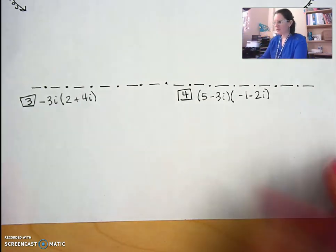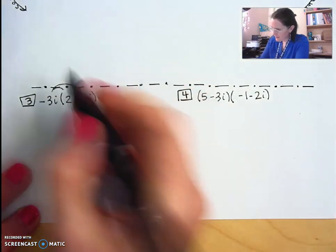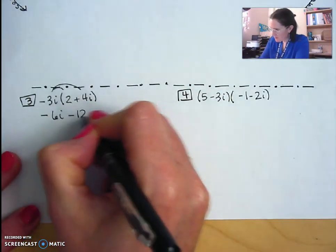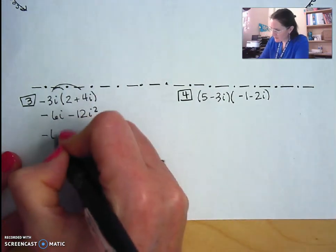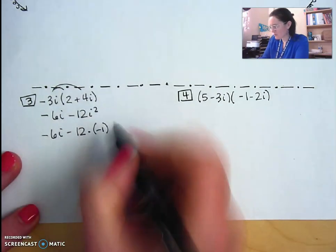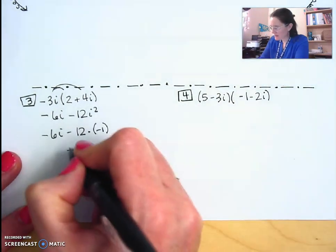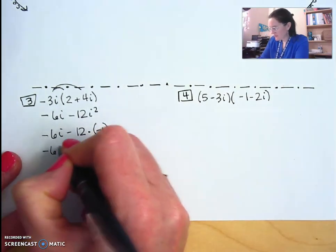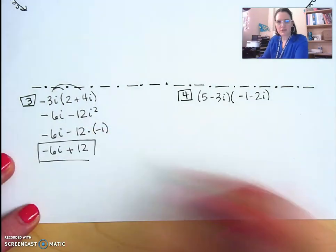Okay, here's what you should have in number 3. You distribute the negative 3i. So that's negative 6i minus 12i squared. Now substitute negative 1 for the i squared. Remember, it's a multiplication, not a subtraction. Negative 12 times negative 1 is positive 12. And then negative 6i, and there's nothing to combine there, so you're just done.